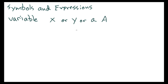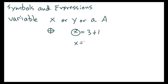Any letter can be used as a variable, or even any symbol — you could have a symbol that looks like this and that could be considered a variable, as long as it represents a number. This is useful when you're trying to figure out an unknown number, or when you're using a variable to represent multiple different numbers. For example, if you have x equals 3 plus 1, x represents a number, and that number is 4 because 3 plus 1 is 4, so x equals 4.